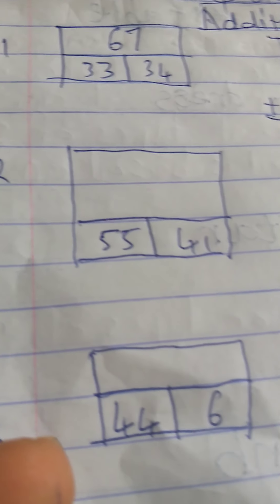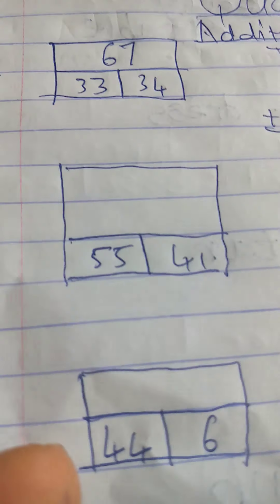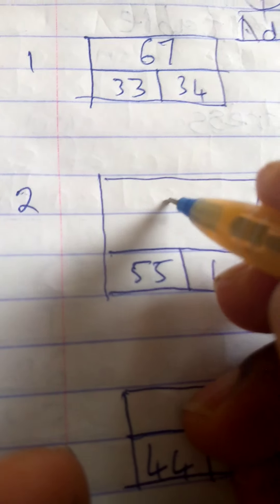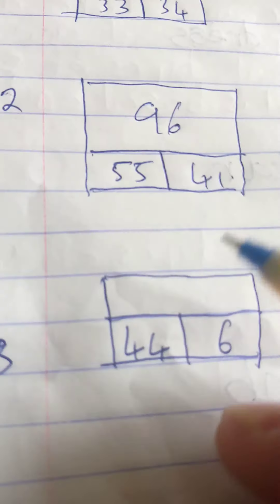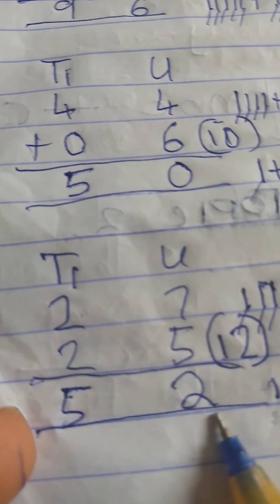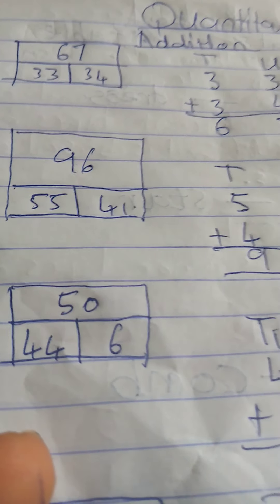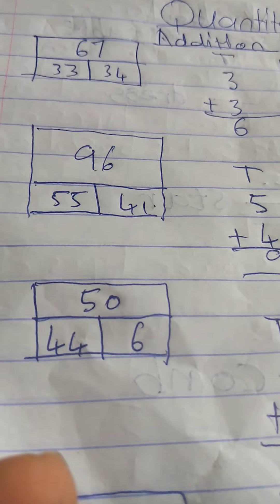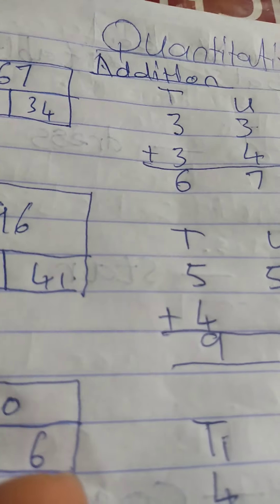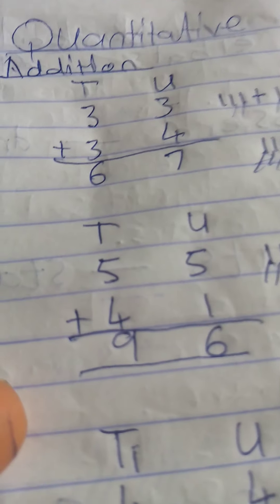Now we are going to write all the answers we have in the boxes. The first one, we have 67. The second one, we have 96. The third one, we have 50. And the last one, we have 52. So this is how we add our numbers under quantitative. Remember, when you have two-digit numbers, add them under tens and units. Good luck with your assignments!